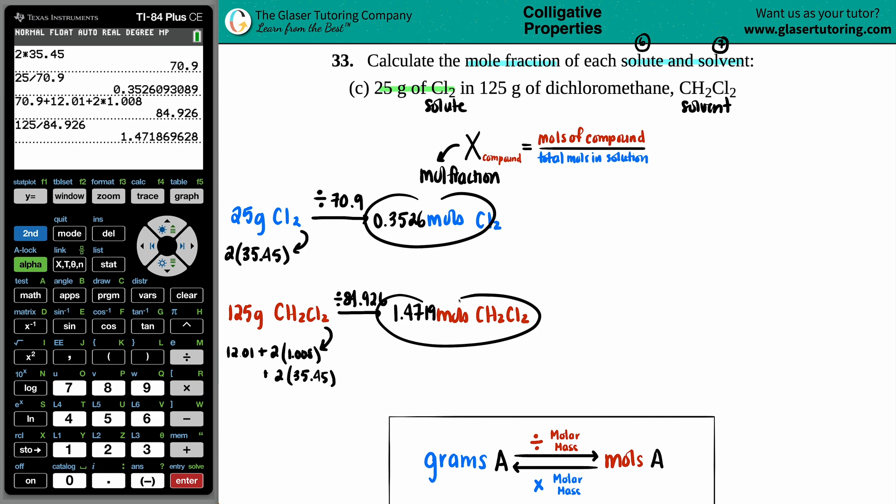Now we have the individual moles of each compound. So I'm slowly getting into my mole fraction. So let's see. We're going to do X and X. We have Cl2. So the mole fraction for Cl2. And then if we're trying to find the mole fraction of Cl2, I put the moles of Cl2 on the top, 0.3526. And if I'm trying to find the mole fraction for CH2Cl2, the 1.4719 goes on the top. But now the question is, what's the number in the denominator? Well, that's the total moles.